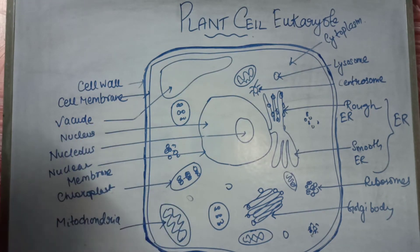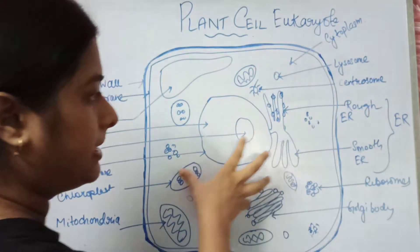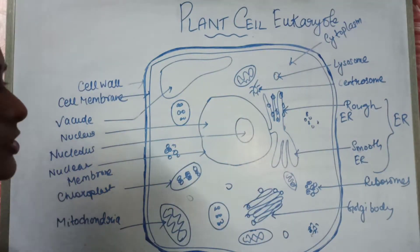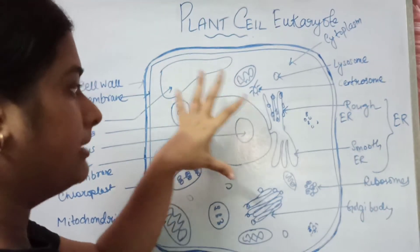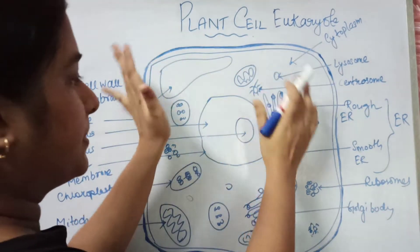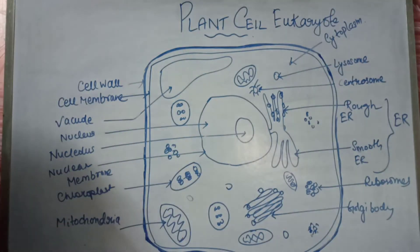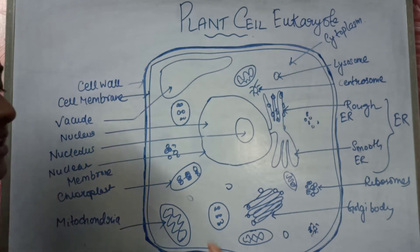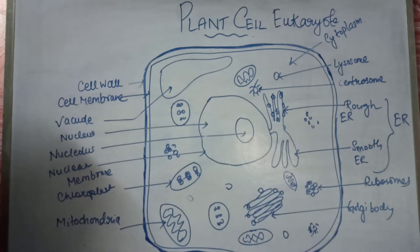The nuclear membrane surrounds the nucleus, making it a double membrane-bound organelle and separating it from the other contents of the cytoplasm and other organelles.